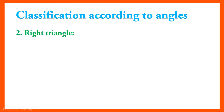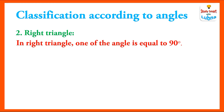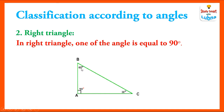The second triangle is right triangle. In a right triangle, one of the angles is equal to 90 degrees. Here the three angles are A, B and C, where angle A equals 90°, angle B equals 60°, and angle C equals 30°. The right angle is represented by a small half-square symbol. So this type of triangle is called right triangle.